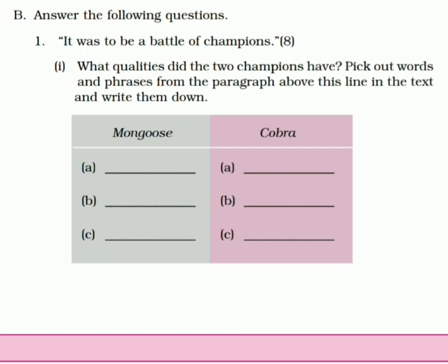Now come to the B point, answer the following questions. 'It was to be a battle of champions.' Yahaan pe paragraph eight likhha hua hai, matlab aapne paragraph eight dekhna hai isko poora karne ke liye. Isme hai ki 'What qualities did the two champions have? Pick out words and phrases from the paragraph.' Toh paragraph eight mein mongoose ki kya qualities hai aur cobra ki jo qualities di hui hai, woh aapne ismein likhni hai.